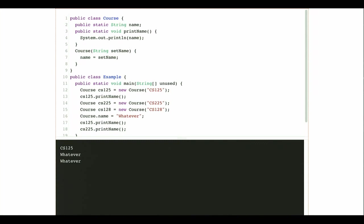Instance variables are normally what you want. Class variables are not very common — there are a couple of strange use cases, but normally instance variables are what you want when designing your classes. For every instance of a particular type of thing to have its own properties is a lot more common. You guys are all students in the class, but you all have your own name, your own UID. Most attributes we care about when modeling students are specific to each student.